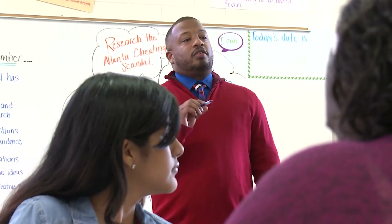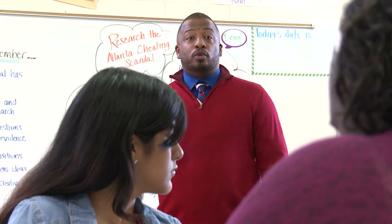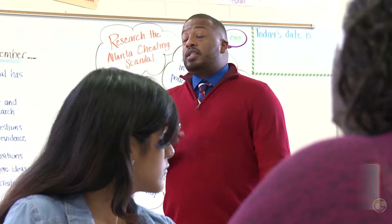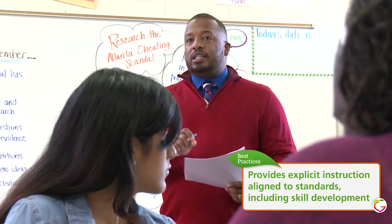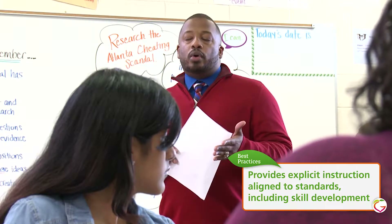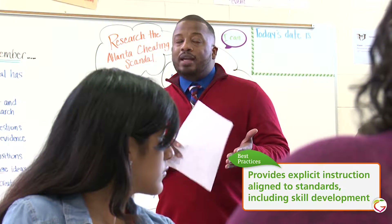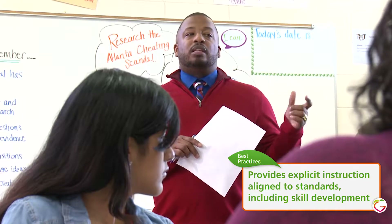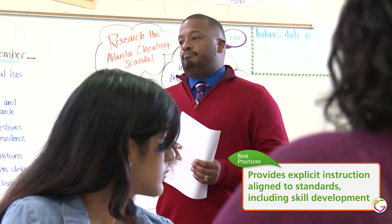Now that we have concluded our debates, we are ready to move into some really strong, rigorous writing. We're going to do an extended argumentative response using two sources. In order to write a really strong extended response that is argumentative in scope, what are some elements that must be present?